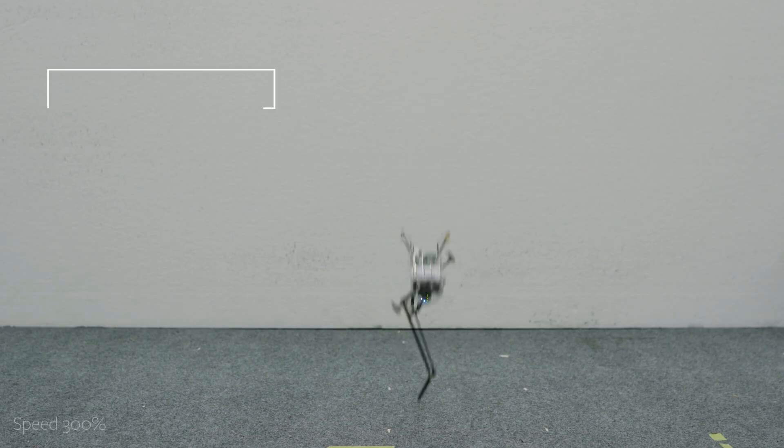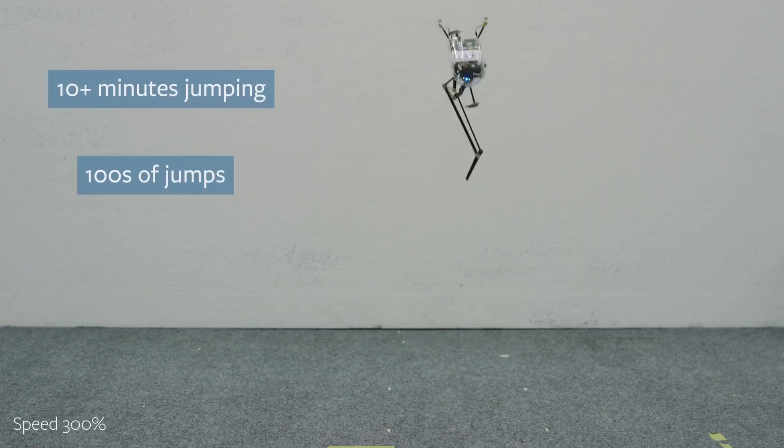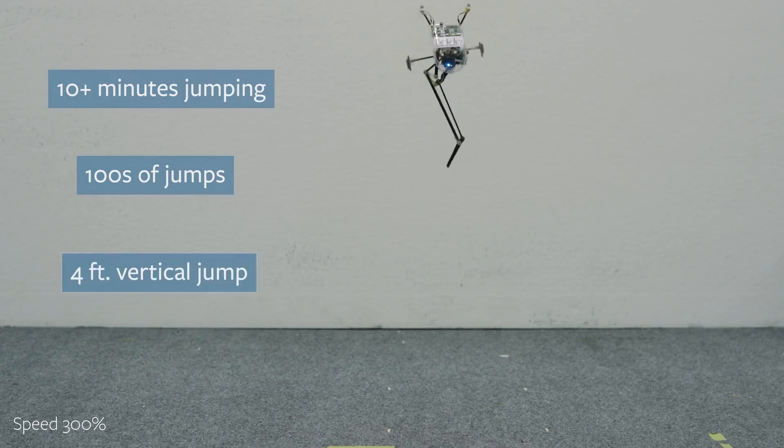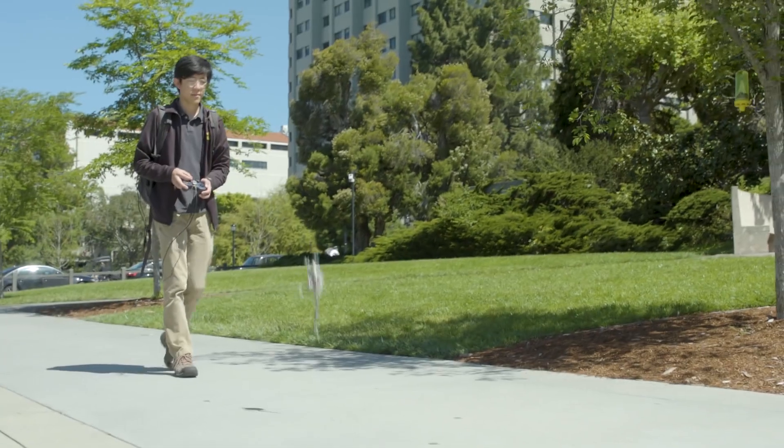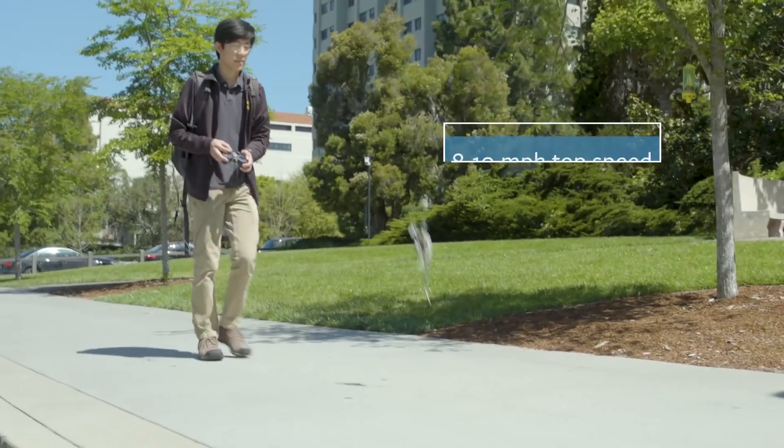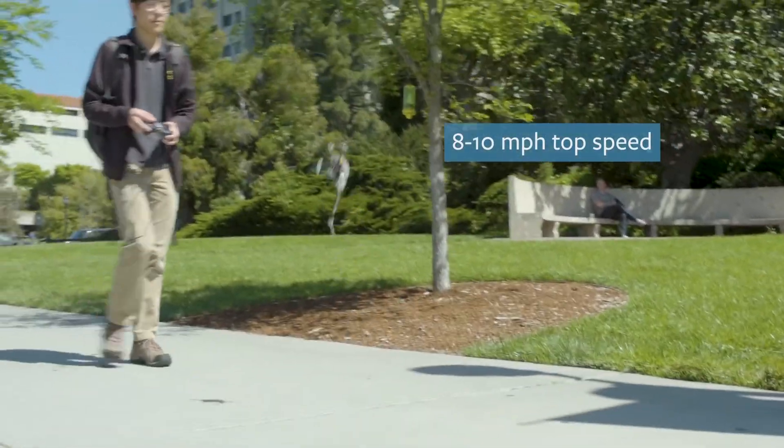Now with the newer version of Salto, it can run for up to ten minutes at a time or even a little bit more and do hundreds of jumps in that period. Its maximum jump is about four feet high and can run eight or ten miles an hour, which is pretty fast for a little guy.